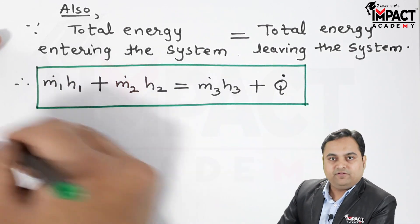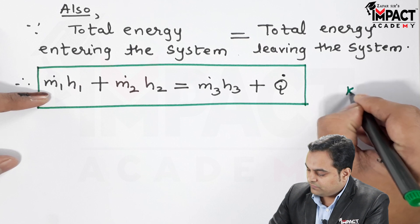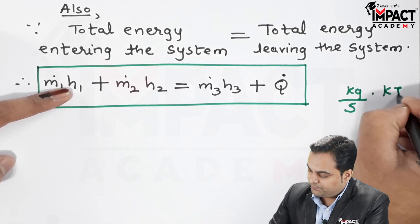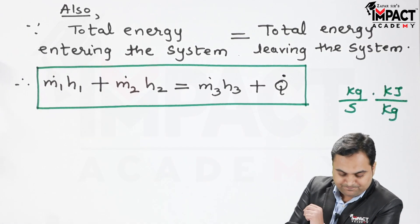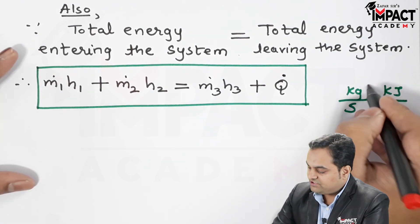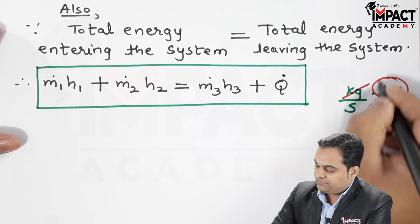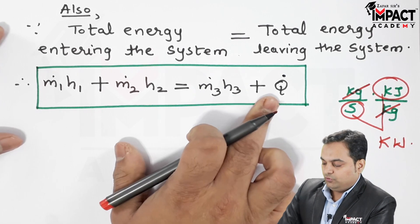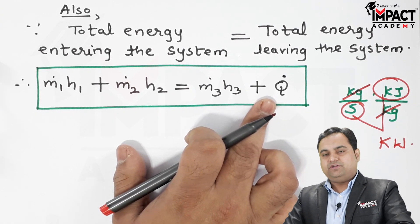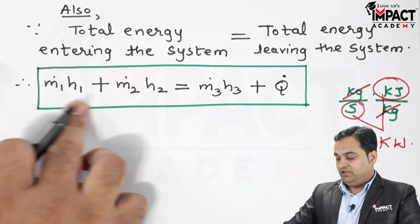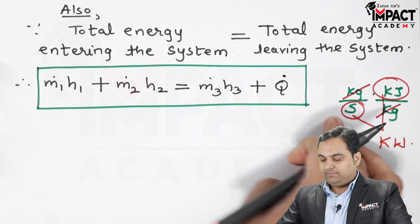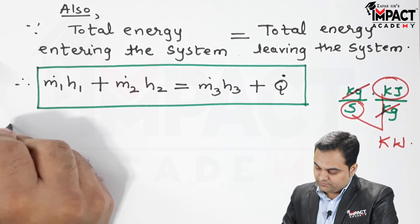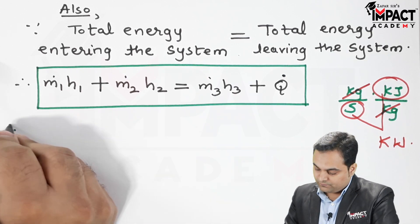We can verify the units: M_dot is in kg per second and enthalpy is specific — kilojoule per kg — so kg and kg cancel out, leaving kilojoule per second, which equals kilowatts. The units of the heat transfer term match the remaining terms, so the units are balanced. We can now directly substitute the values.